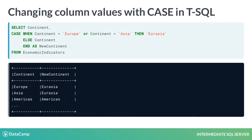In this query, we create a column called new continent, in which the value is 'Eurasia' if the corresponding row in the continent is either Europe or Asia. If the continent is not Europe or Asia, then the value in new continent does not change.